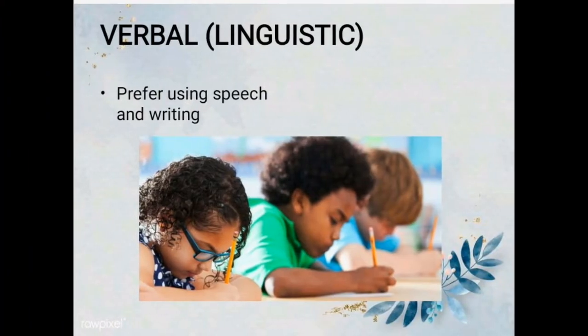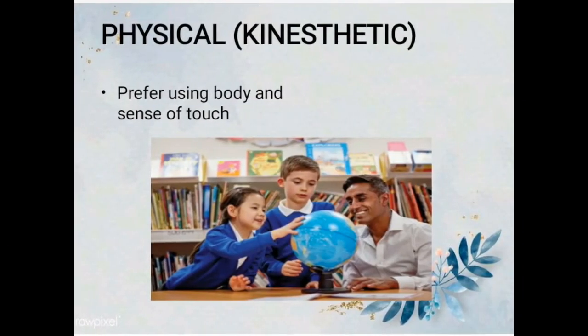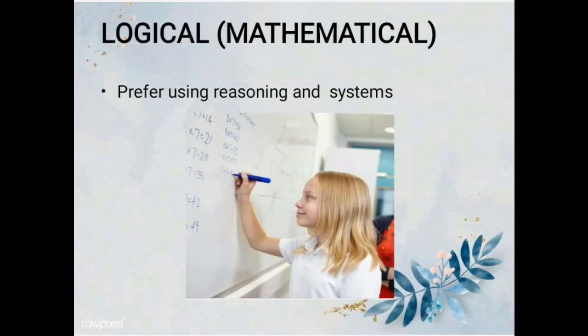Number three: verbal or linguistic — you prefer using words, both in speech and writing. Number four: physical or kinesthetic — you prefer using your body, hands, and sense of touch. Number five: logical or mathematical — you prefer using logic, reasoning, and systems.